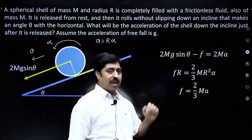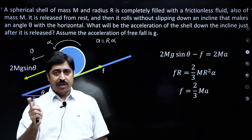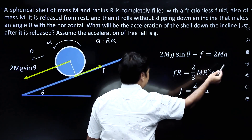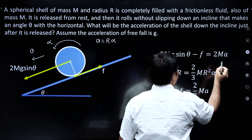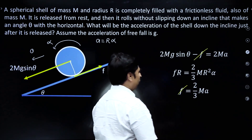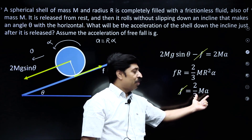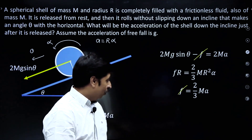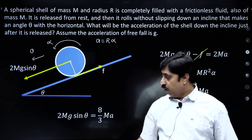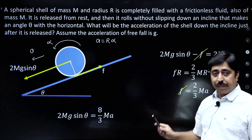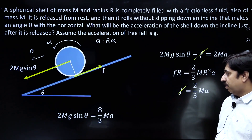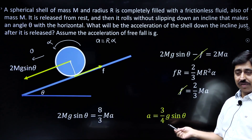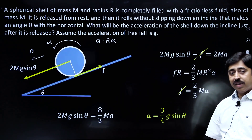This is one equation and this is another. Adding these two equations, friction cancels out — minus F and plus F cancel. You get 2mg sinθ = (2/3)ma + 2ma = (8/3)ma. M cancels out and you get the value of acceleration: a = (3/4)g sinθ.